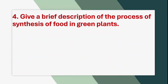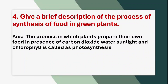Fourth question: Give a brief description of the process of synthesis of food in green plants. Answer: The process in which plants prepare their own food in the presence of carbon dioxide, water, sunlight and chlorophyll is called photosynthesis.